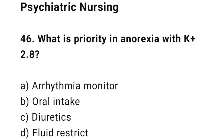Psychiatric nursing. Question number 46: What is the priority in anorexia with K+ of 2.8? The correct answer is A, arrhythmia monitoring.